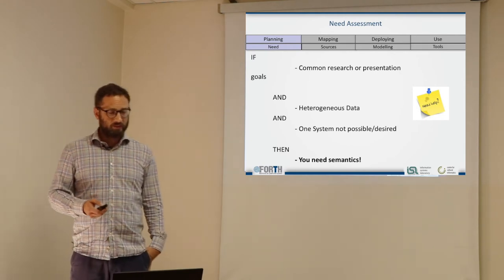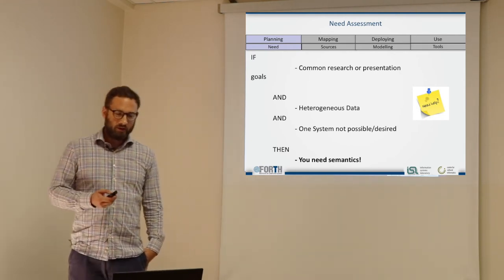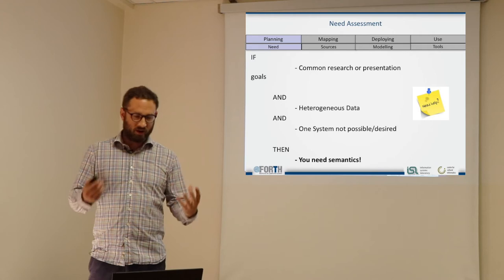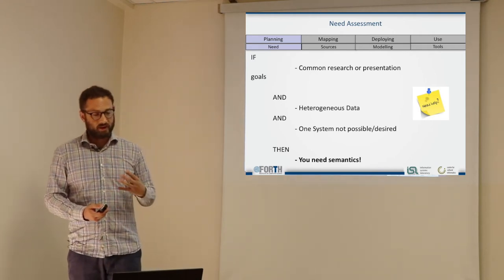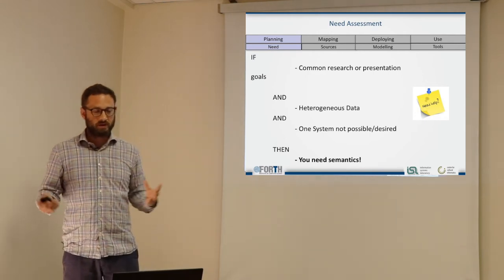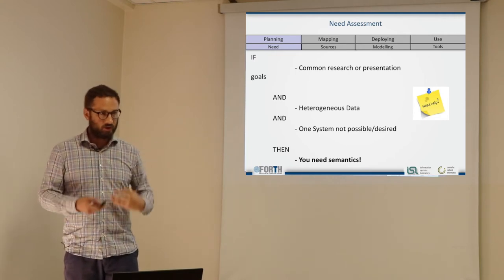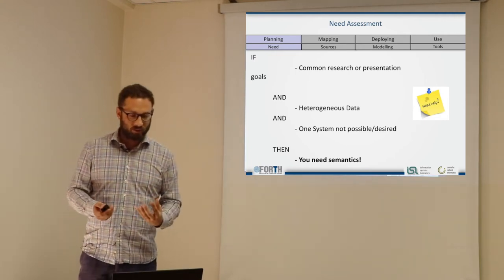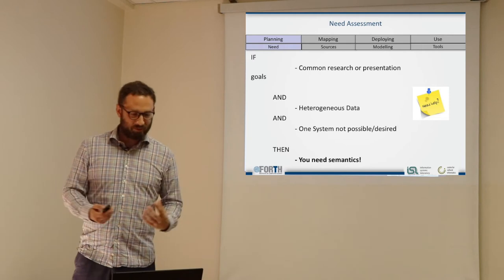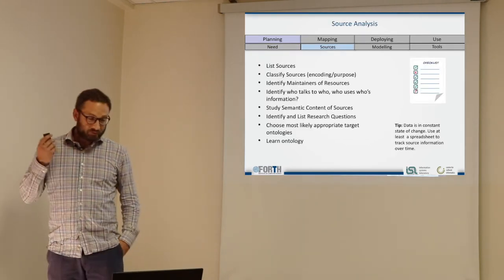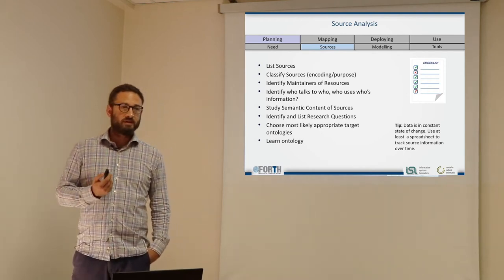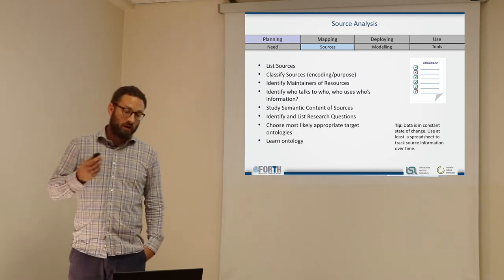Basically, if you have the need or desire for common research or presentation of information, and your data is heterogeneous, and there's no possibility of using one system and one data standard because you're interdisciplinary — different teams, different institutions — then you would need semantics. If you don't have that need, you might avoid some complexity. If you've established the need for semantic data, the next thing is to understand which data you want to represent semantically.